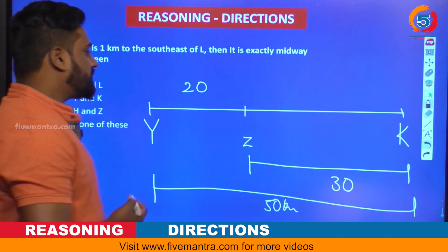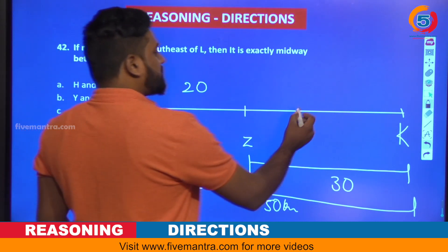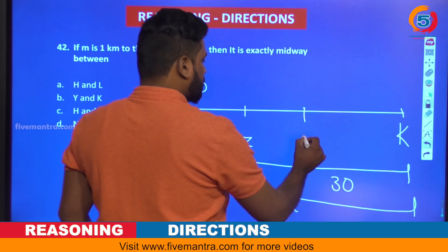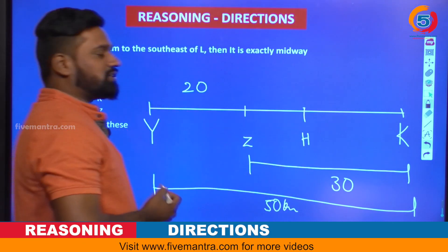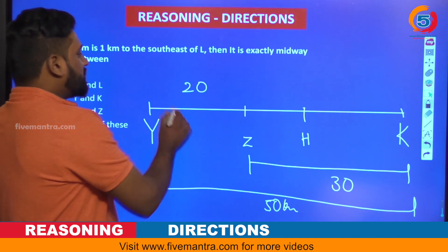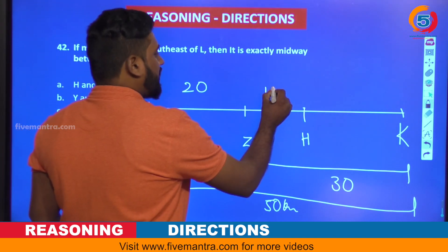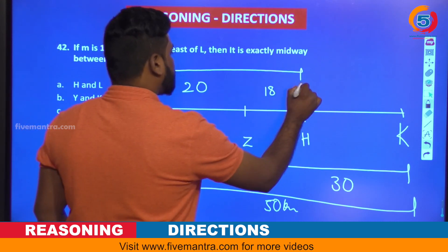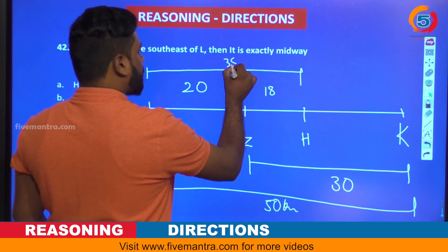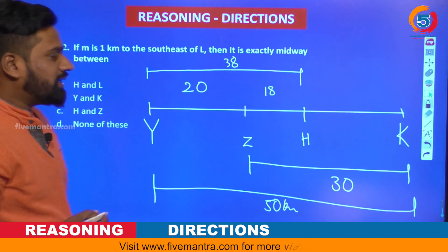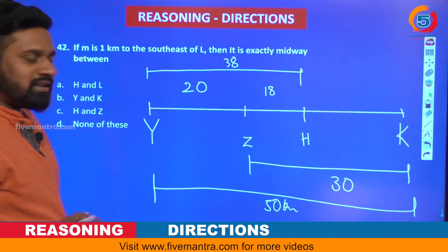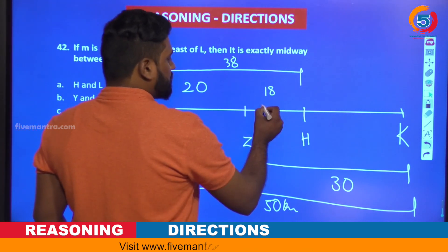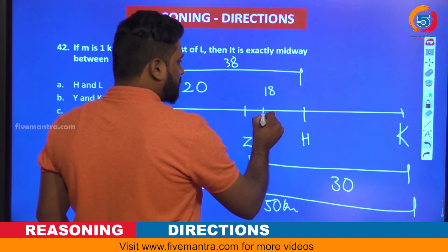H is given — H is 38 kilometers from Y. So this segment is 20, which means this portion is 18, making the total 38. That is clear — this total is 38. And one more point is given: L is 14 kilometers west of H, so L is 14 kilometers in the west direction.